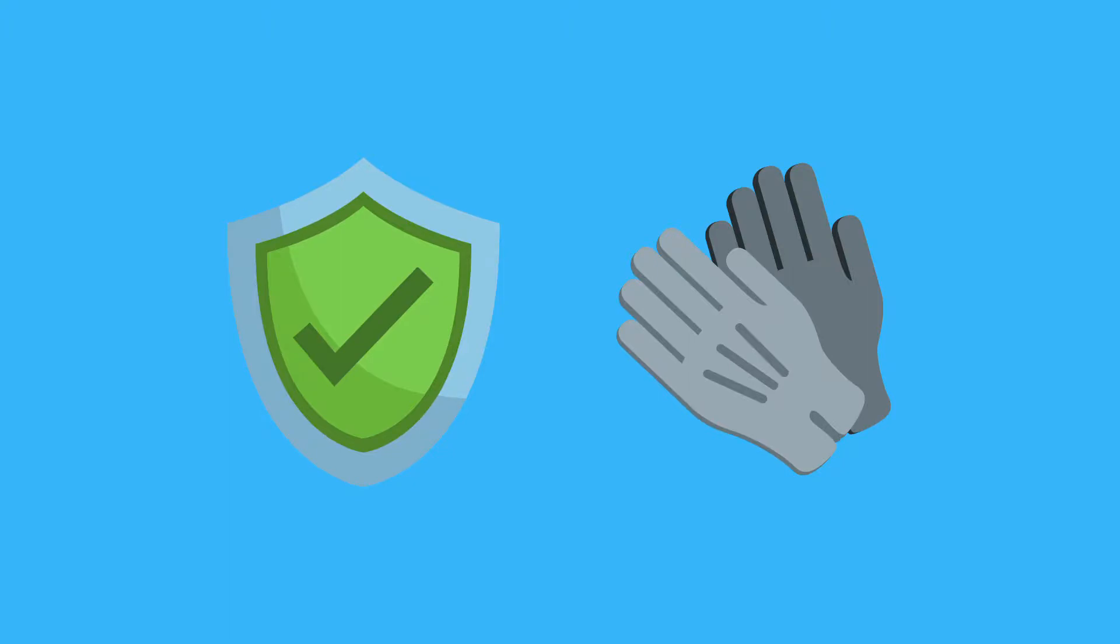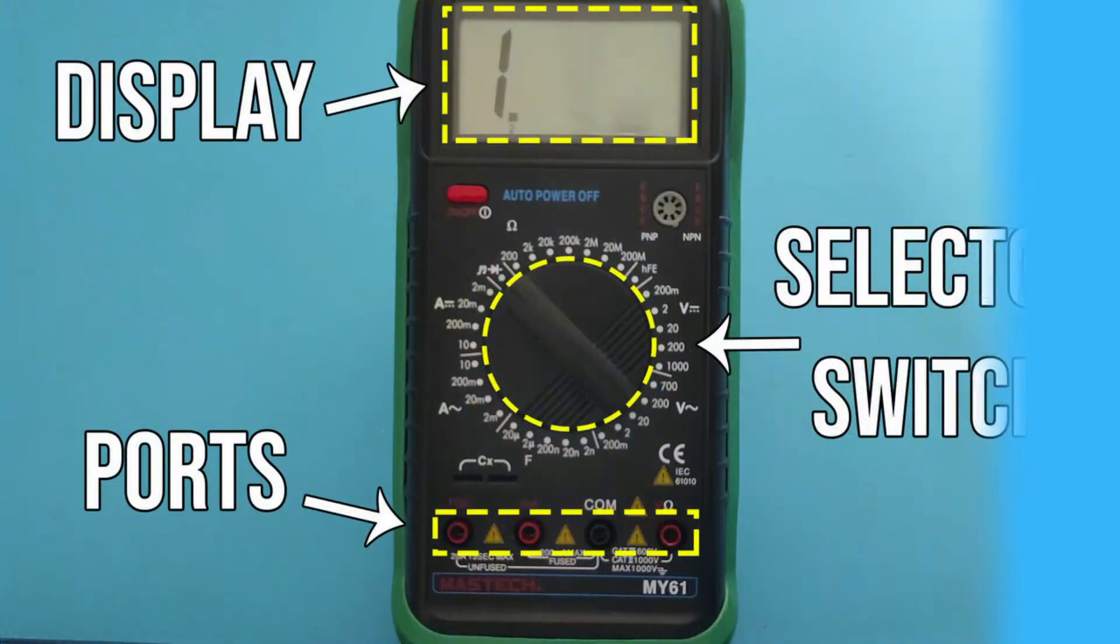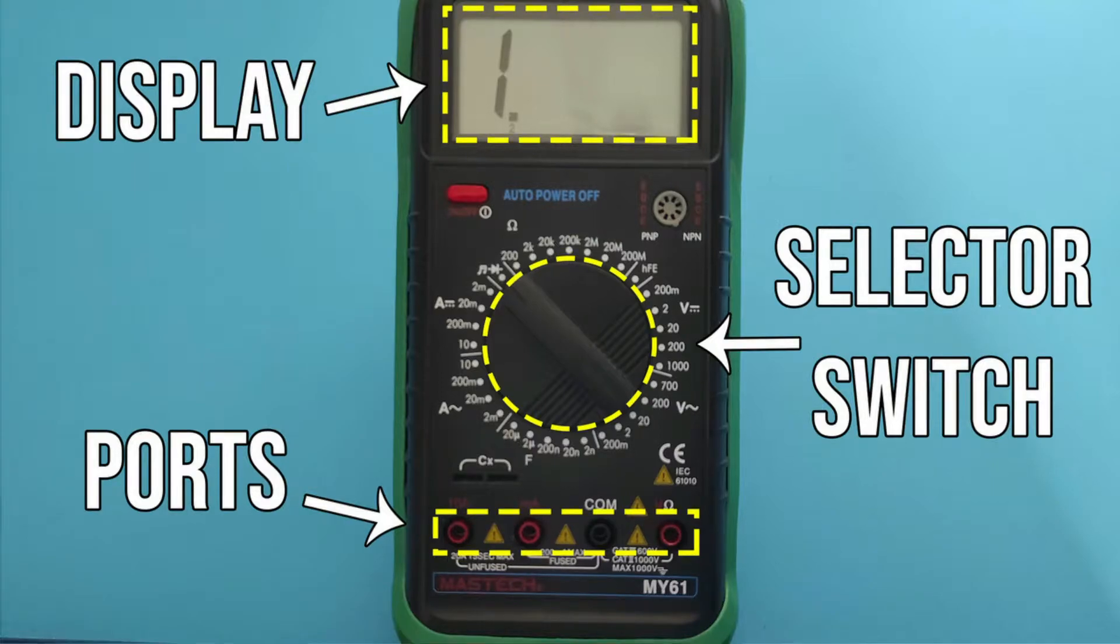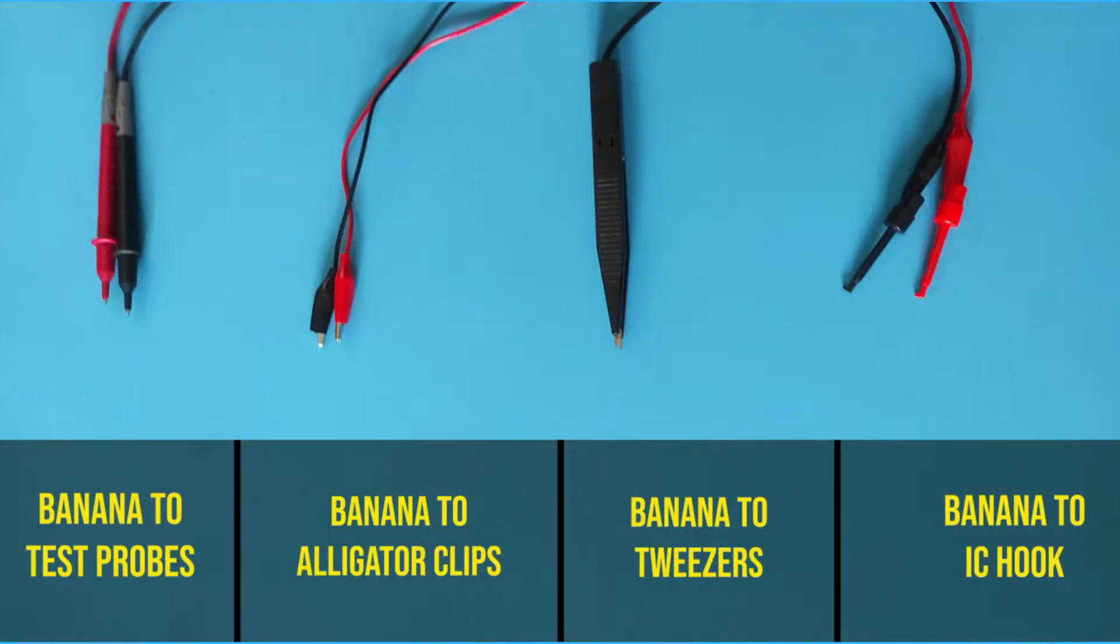Multimeter has three parts: display, selector switch, and ports. There are different types of probes for your multimeter depending on what you want to measure. It's best to have all kinds of probes. They are very cheap and they'll make your job easier. I will add links in the description for probes too.